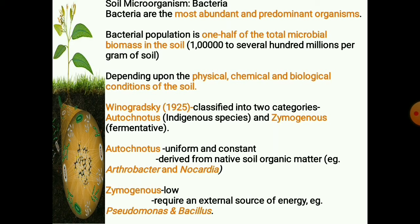Bacteria are motile with locomotory organs, that is flagella. Bacterial population is one half of total microbial biomass in the soil, ranging from one lakh to several hundred millions per gram of soil, depending upon the physical, chemical, and biological condition of the soil. In 1925, Waksman, on the basis of ecological characters, classified soil microorganisms in general and bacteria in particular into two broad categories: autochthonous and zymogenous.